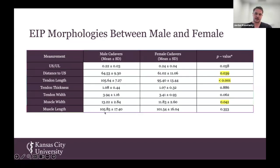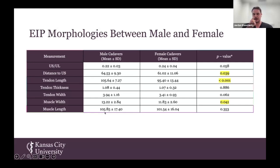We looked at the morphologies between males and females and found three statistically significant measurements. Male cadavers demonstrated a longer tendon length of 105.64 millimeters compared to 95.4 millimeters in females. Male cadavers also had a larger muscle width at 13.22 millimeters compared to 11.83 millimeters. Additionally, male cadavers had a larger distance from the EIP muscle center to the styloid process at 64.53 millimeters compared to 61.02 millimeters.